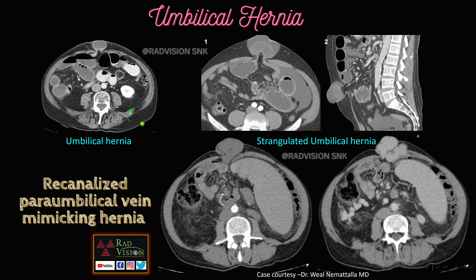Next, commonly we see small bowel loops herniating through the umbilical region — this is umbilical hernia with dilatation of bowel loops. Here also there is herniation of the bowel loop through the umbilical defect, but the enhancement of the herniated bowel loop is not similar to the bowel loops in the abdomen, and there is a narrow pedicle with crowding of vessels — this was a case of strangulated umbilical hernia. Here also there is a soft tissue lesion in the abdominal wall mimicking hernia, but after contrast the enhancement is similar to multiple collaterals with splenomegaly — this was portal hypertension with a recanalized paraumbilical vein mimicking umbilical hernia.